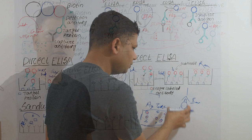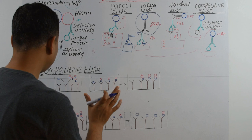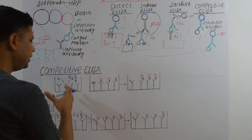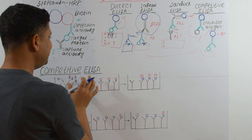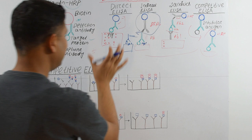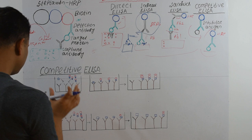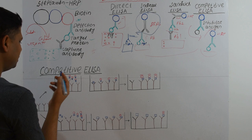Now we will discuss Competitive ELISA. It is called 'competitive' because we compete our sample antigen against a fixed, HRP-tagged antigen. This type of ELISA can be combined with any of the previously discussed types — Direct, Indirect, or Sandwich. Suppose we have two serums: one with low antigen and one with high antigen.